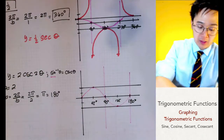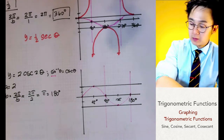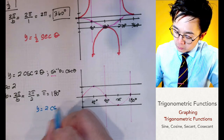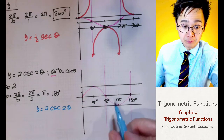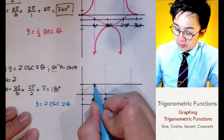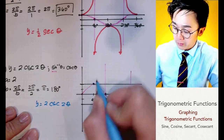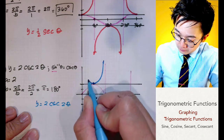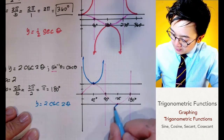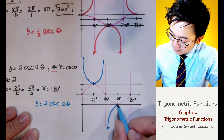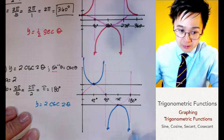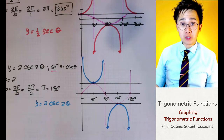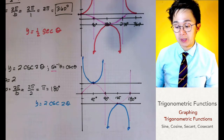Starting from the peak, we trace the cosecant curves using the asymptotes as guides. This completes the graph of y equals 2 cosecant 2 theta, and demonstrates how we graph secant and cosecant functions by first drawing their inverse function guides.